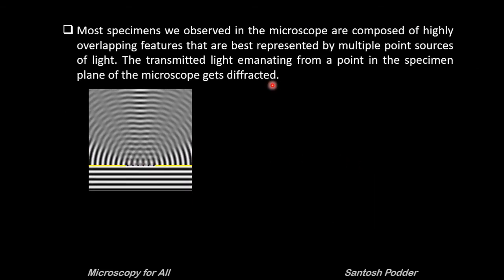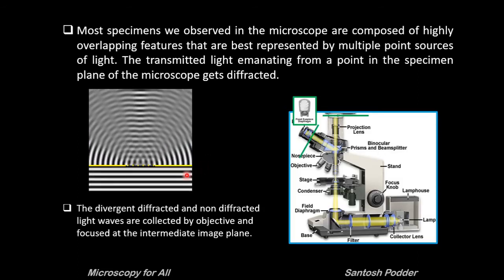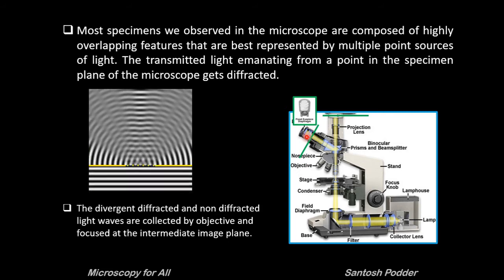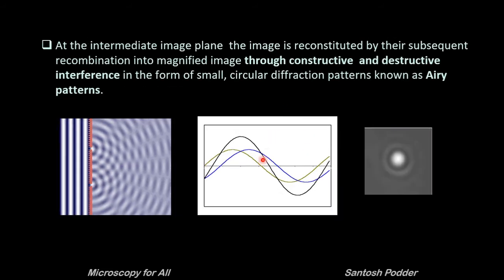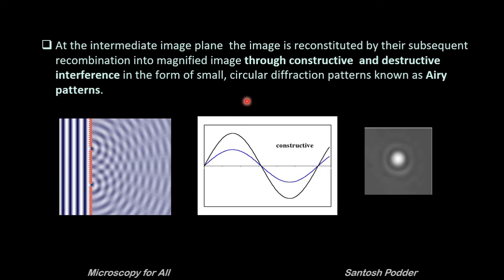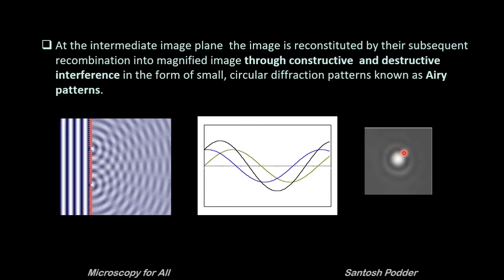Most specimens we observe in the microscope are composed of highly overlapping features that are best represented by multiple point sources of light. The transmitted light emanating from a point in the specimen plane of the microscope gets diffracted, and the divergent diffracted and non-diffracted light waves are collected by the objective and focused in the intermediate image plane. At the intermediate image plane the image is reconstituted by their subsequent recombination into a magnified image through constructive and destructive interference in the form of small circular diffraction patterns known as Airy patterns.